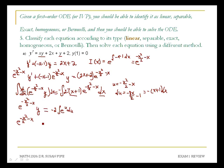When you integrate e to the u, you get e to the u back. So I get minus 2 times e to the negative x squared over 2 minus x, plus c.